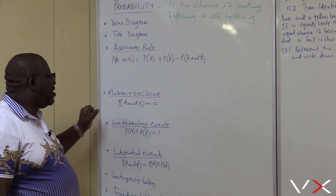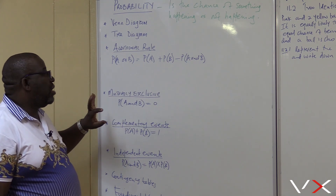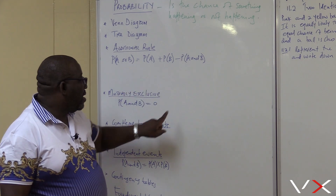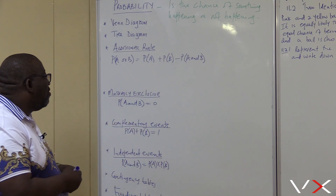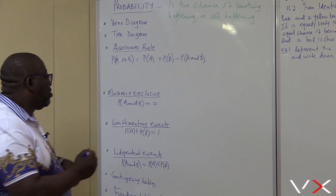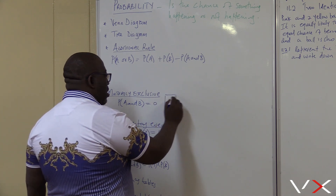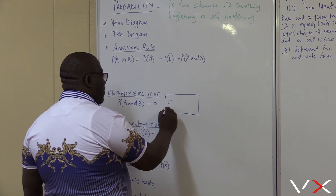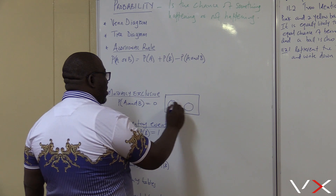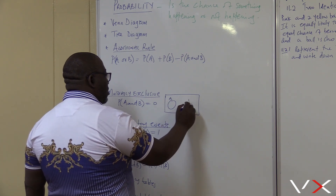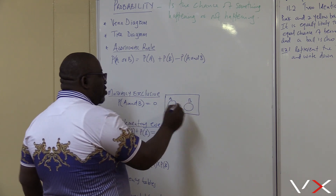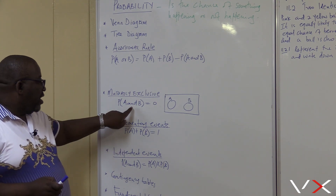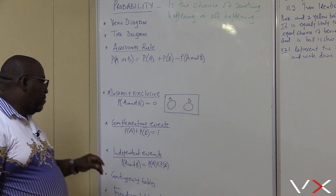Mutually exclusive events means there is no intersection. The Probability of A and B becomes 0. If this is event A and this is event B, there is nowhere the two events interact — no intersection. So the intersection is 0; it's not there.